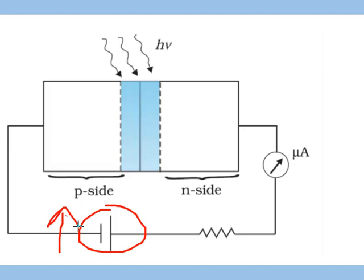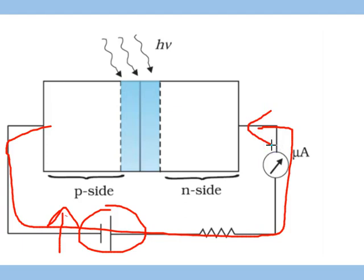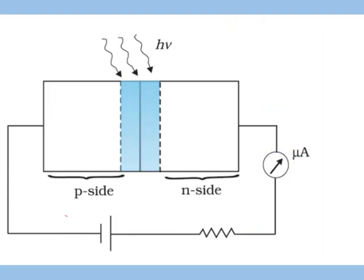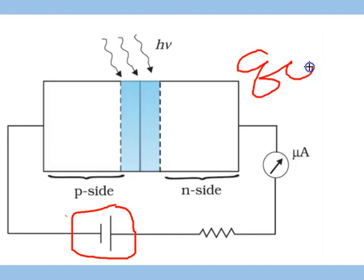So this current is increasing with increase in this voltage. At a particular value of this voltage, all the electron hole pairs which were generated, which were 80 in our case, they will constitute this current.